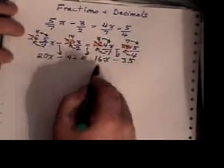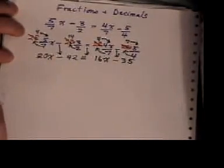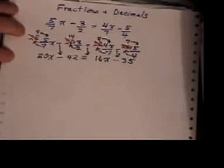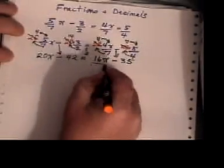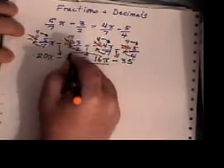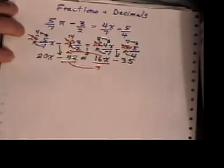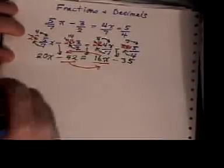Okay, now at this line here, you now have suddenly no fractions appearing at all. Now you just have to cross border shock. Let's bring 16x this way and minus 42 that way and see what we've got.